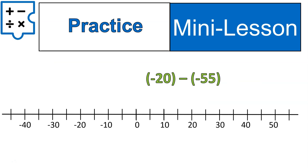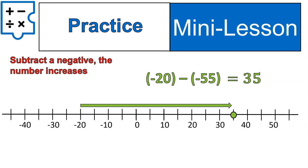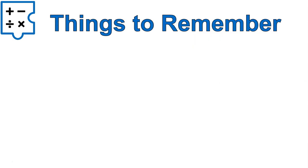Here's one more: negative 20 minus negative 55. Lots of practice today. Starting at negative 20, taking away negative 55 — or adding 55 — will bring us all the way up to positive 35. All those negatives in the question end up with a positive answer, which might seem strange. We started at negative 20, took away negative 55, or in other words added 55 and increased by 55. Subtracting a negative increases the number.